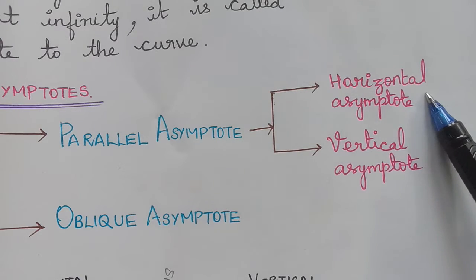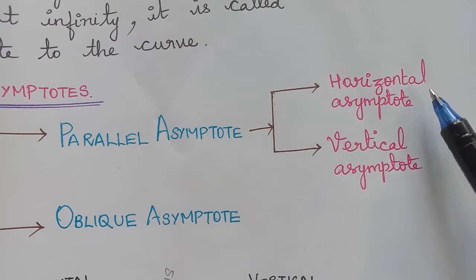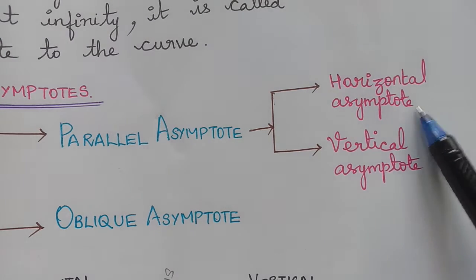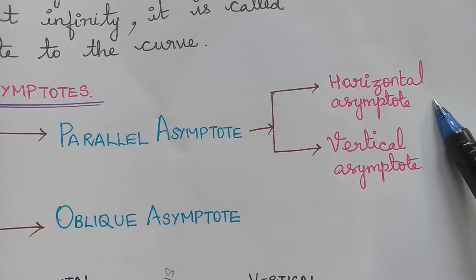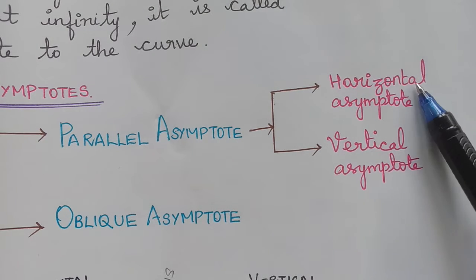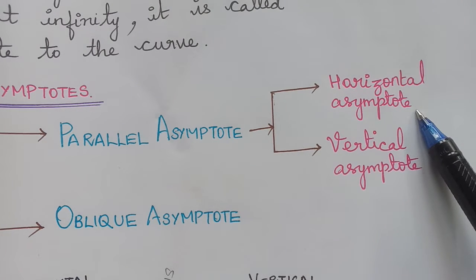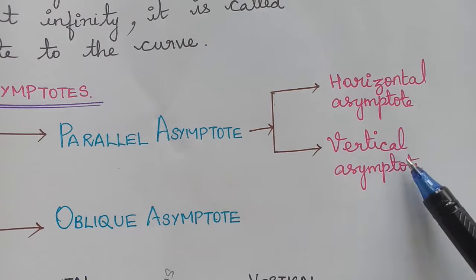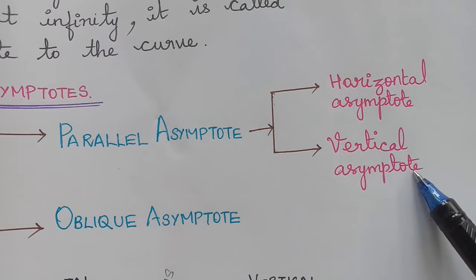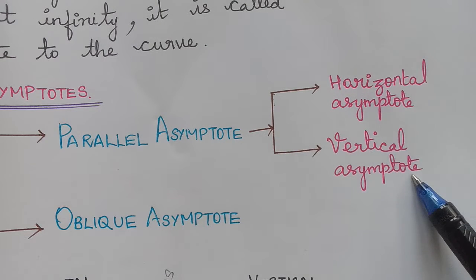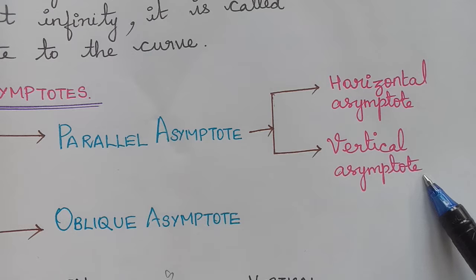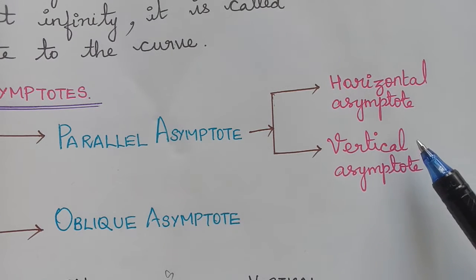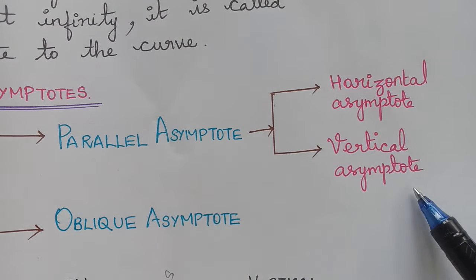If the asymptote is parallel to the x-axis, then it is said to be the horizontal asymptote. And if the asymptote is parallel to the y-axis, then it is said to be the vertical asymptote.